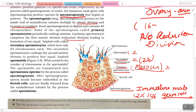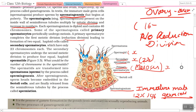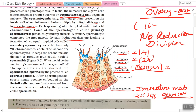The secondary spermatocytes undergo the second meiotic division to produce four equal haploid spermatids, each with 23 chromosomes. So from one spermatogonium, four spermatids are formed. The spermatids will have half (x) chromosomes, and the ovum will also have x chromosomes, so when they combine the total will be 2x = 46, maintaining the hereditary character.